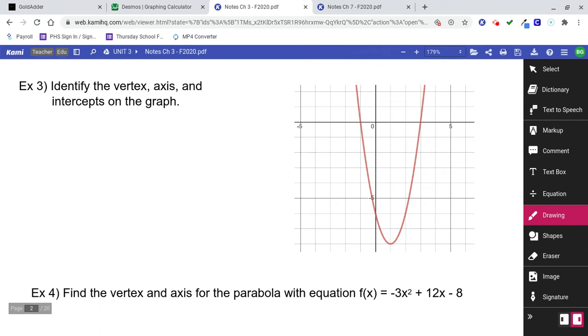Example 3. Identify the vertex, axis, and intercepts on the graph. So it's already been graphed for you. You ought to be able to just look at it.